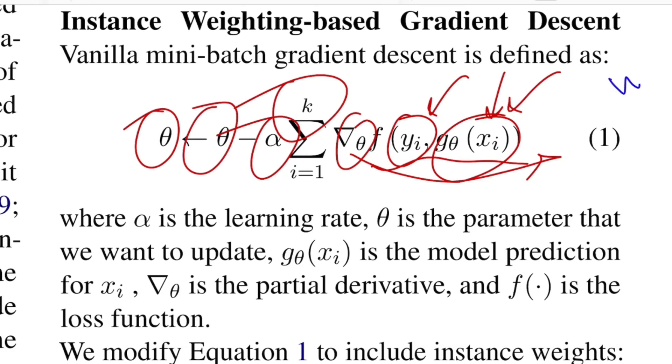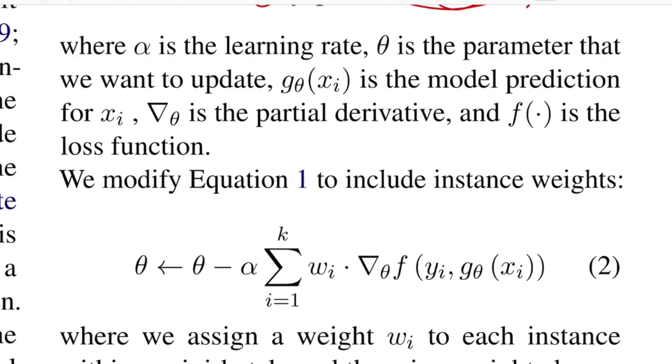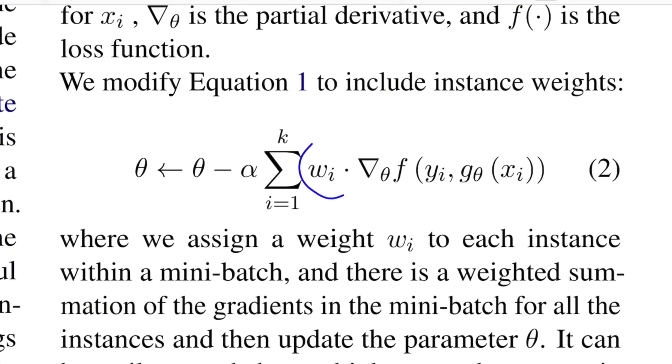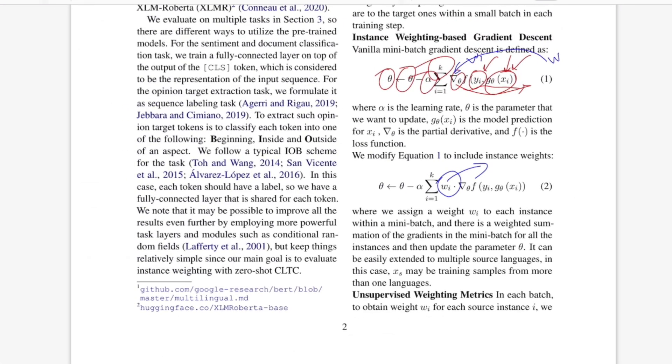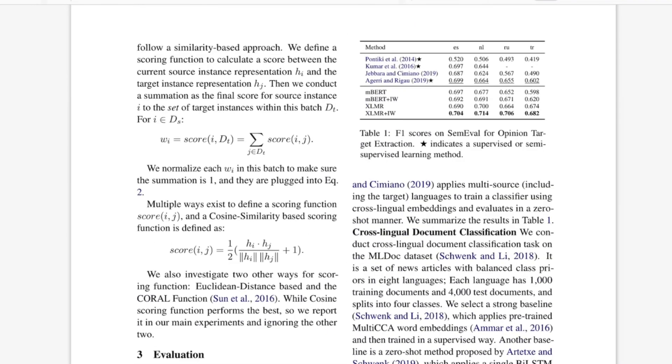So this is the updated equation. Rest everything is same, but this is what you have with respect to every instance in the mini batch. As I said, wi is nothing but the similarity score that they calculate for every source instance hi with every instance in the batch size of d in the target input, which is nothing but a cosine similarity where we have a plus one term as well, which makes it a range from 0.5 to one.